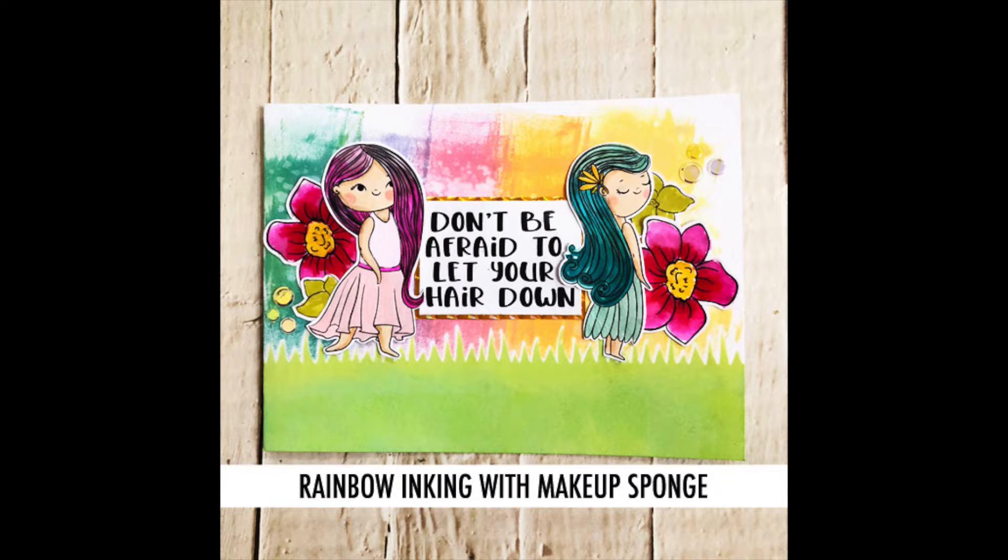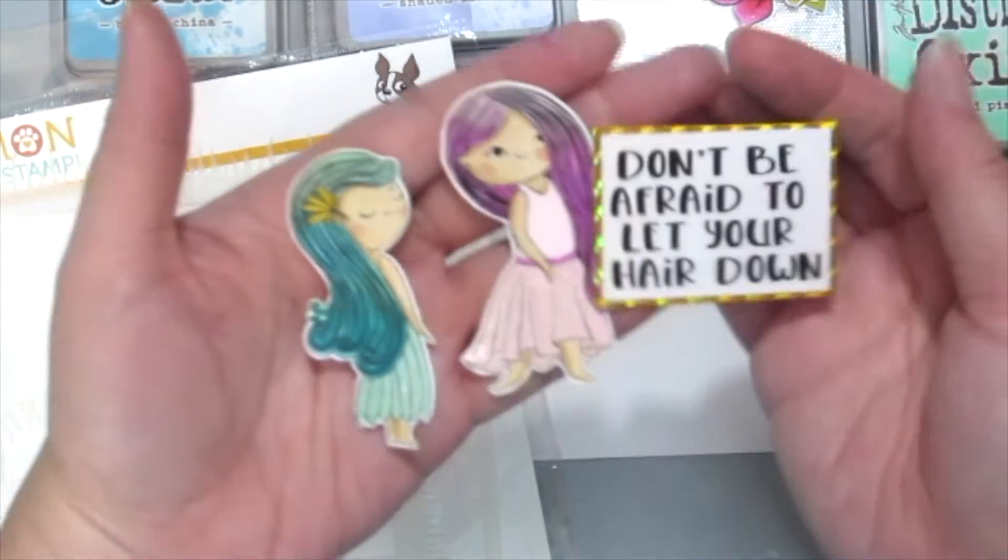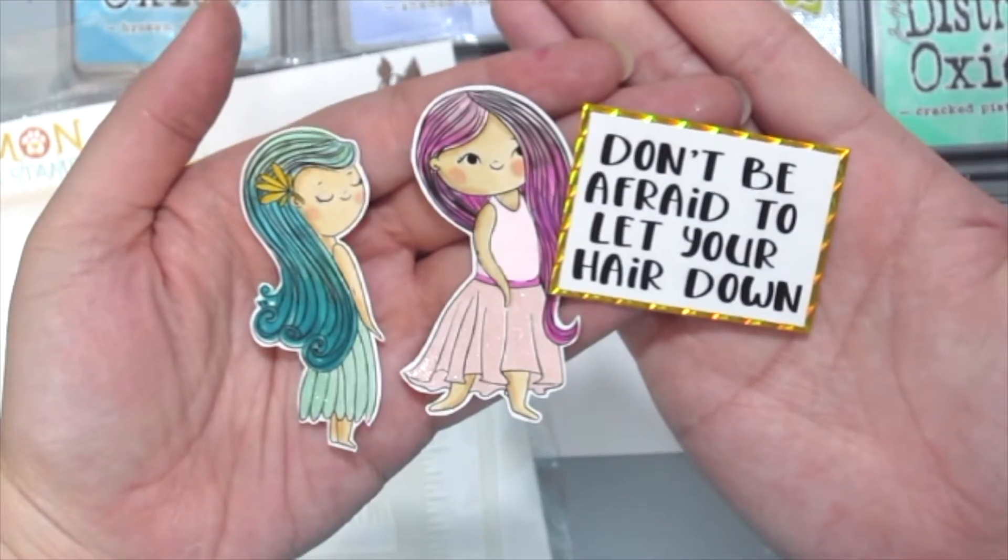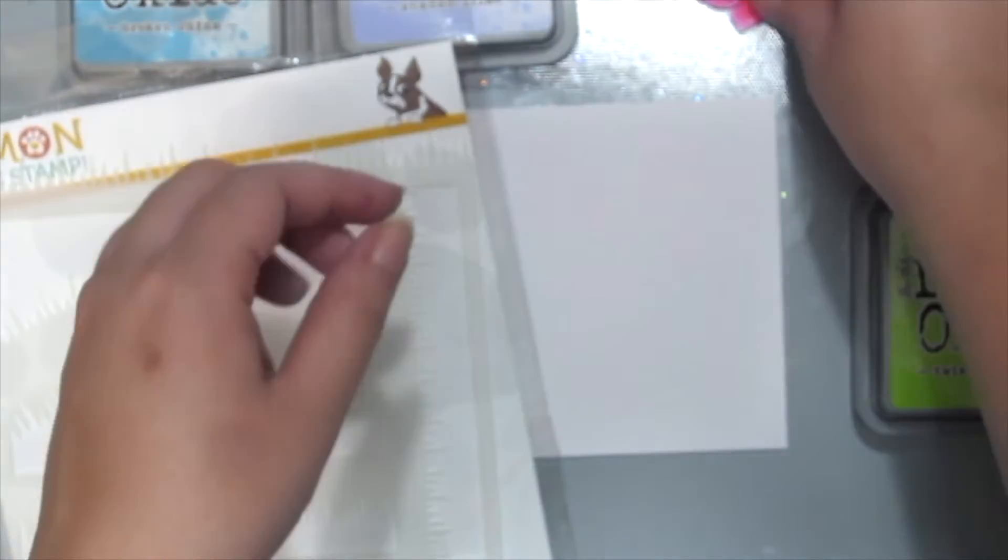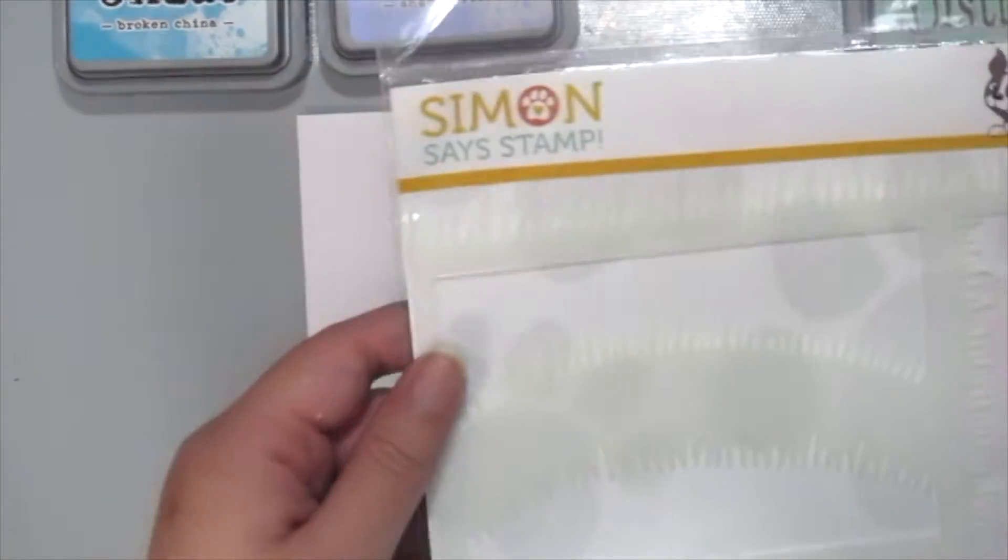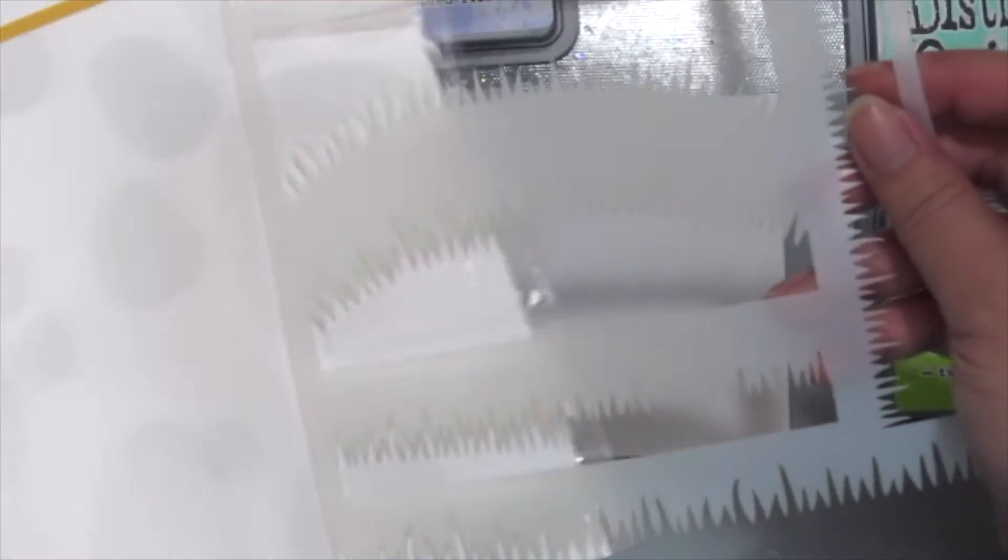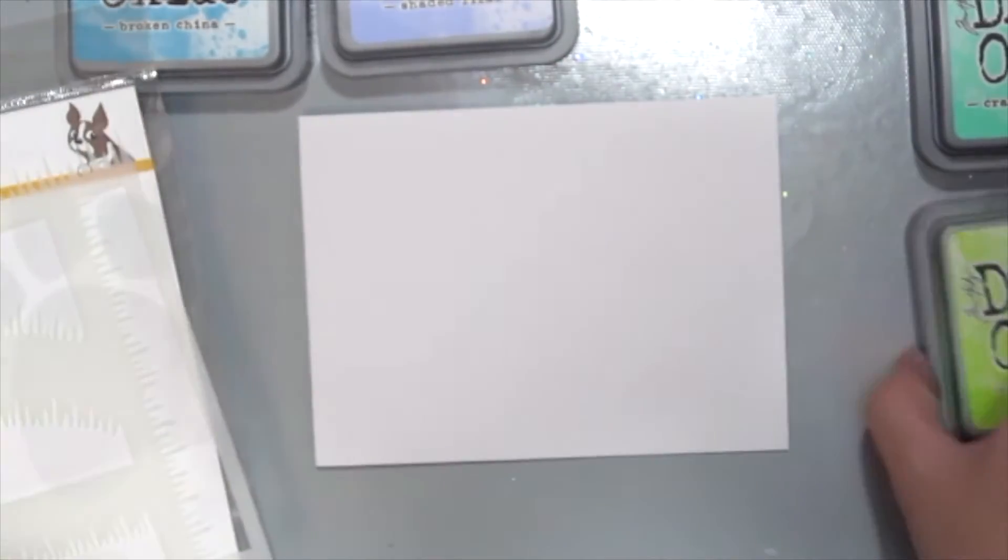First, I've already stamped and colored these cute girls from the Let Your Hair Down kit, which is so cute. I'm grabbing these flowers from the Choose What to Become kit, also from Unity, and I'm grabbing this grass stencil from Simon Says Stamp called the Grassy Edges to ink up with my Tim Holtz Distress Oxide inks.